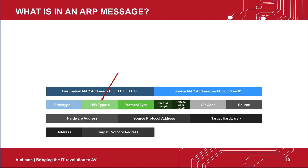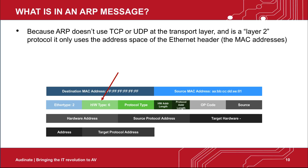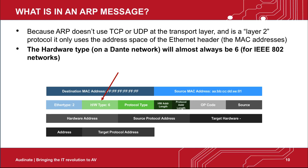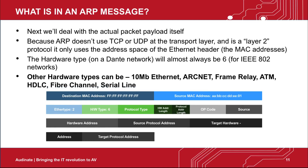Next, we'll deal with the actual packet payload itself. Because ARP doesn't use TCP or UDP at the transport layer, and is a layer 2 protocol, it only uses the address space of the Ethernet header. The hardware type will almost always be 6. Other hardware types can be 10 megabit Ethernet, ARCnet, frame relay, ATM, HDLC, fiber channel, and serial line.